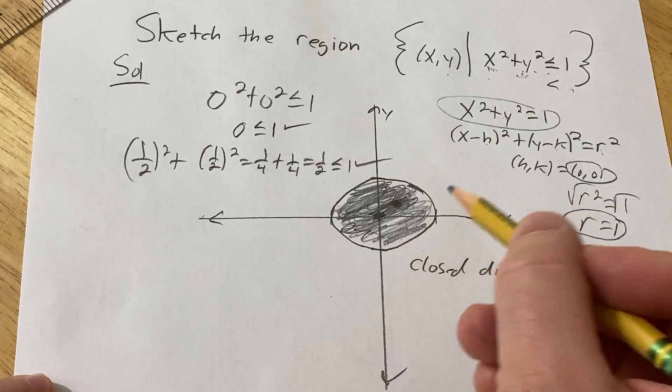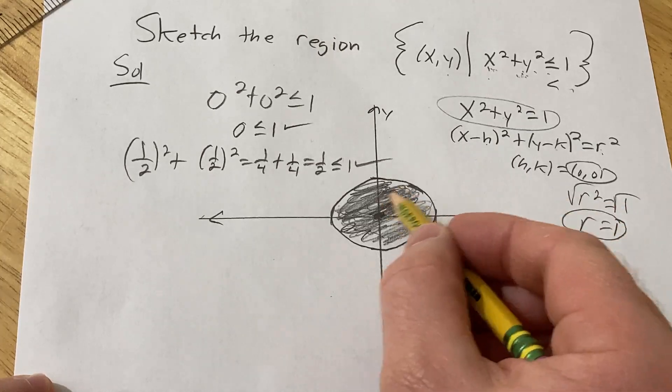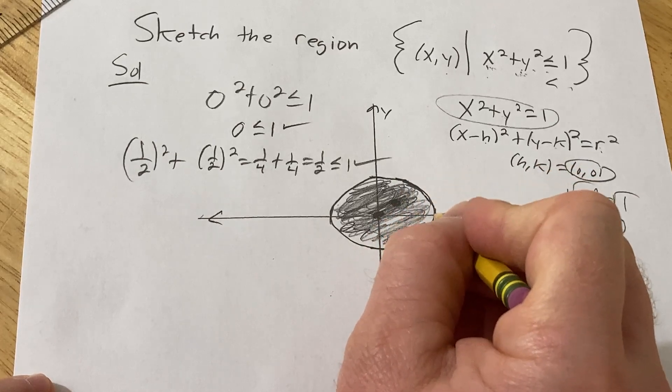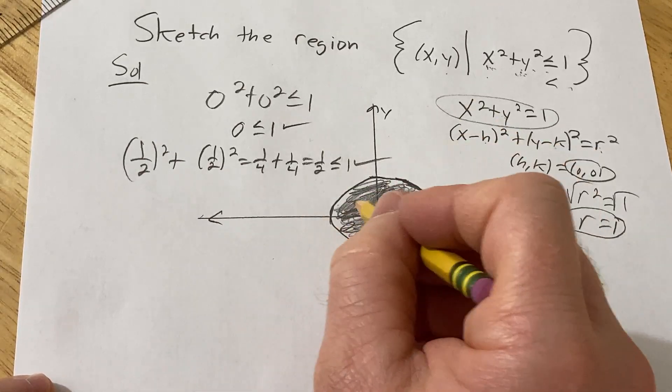And it's also called the unit disk because it's the interior and the boundary. This is called the boundary, the actual circle part of the unit circle.